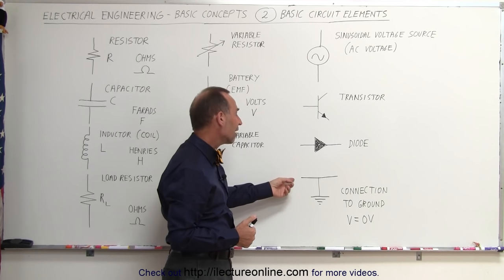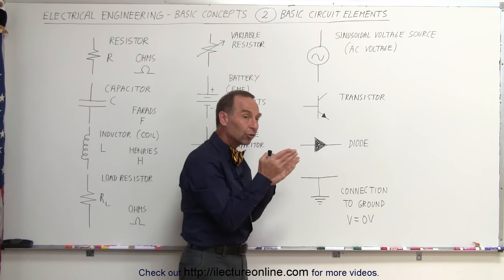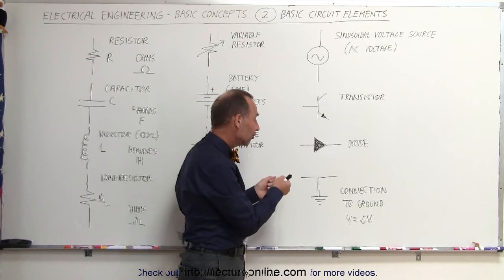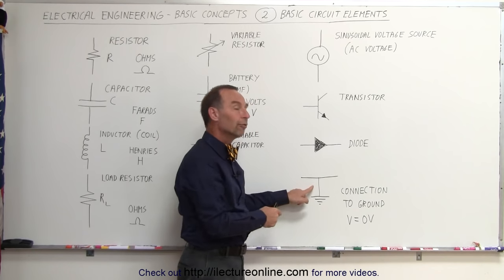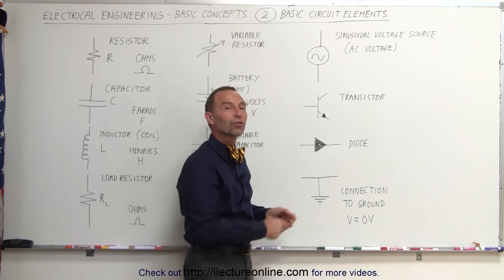And finally, we have something what we call connection to ground. This is a ground connection. We have a series of small lines that get shorter and shorter. That means when your circuit is connected to ground, the voltage will be zero at that location, and that then becomes your reference voltage of the circuit.